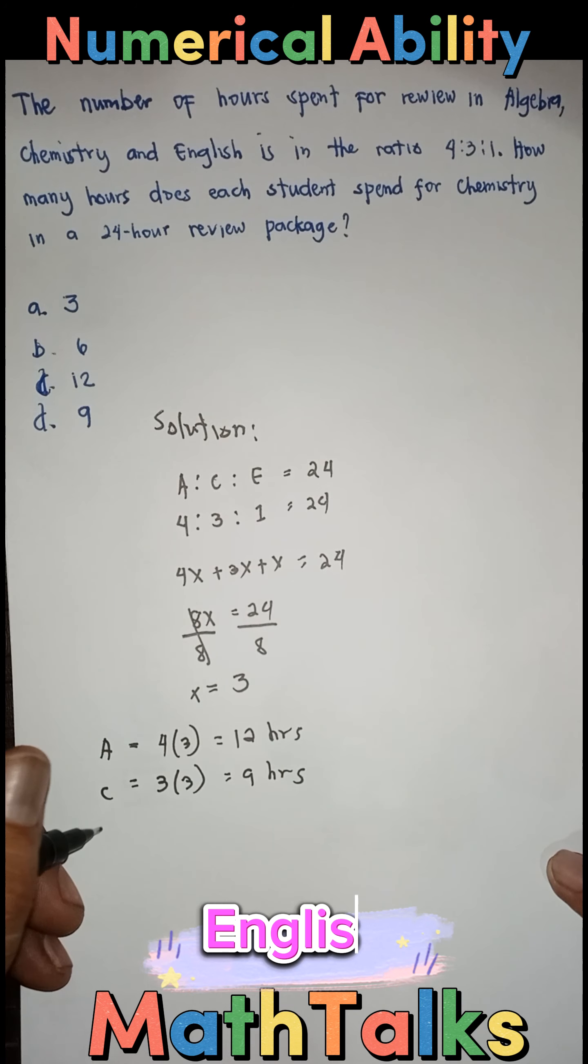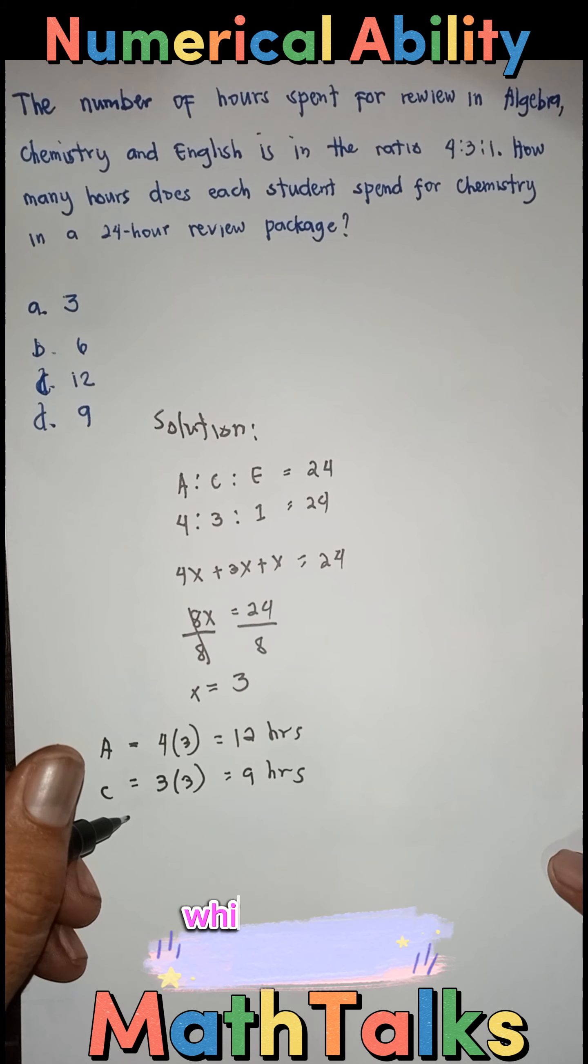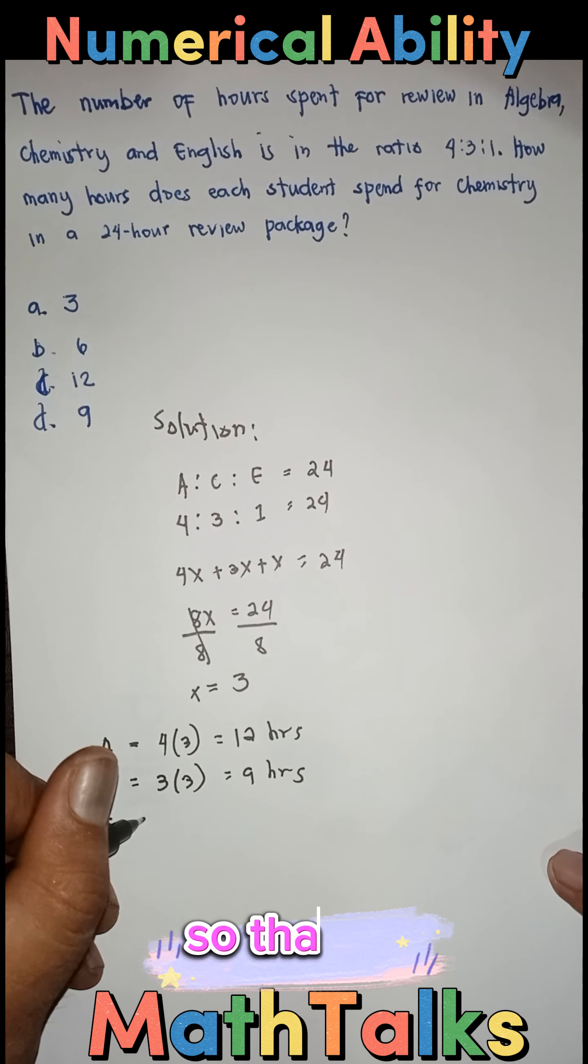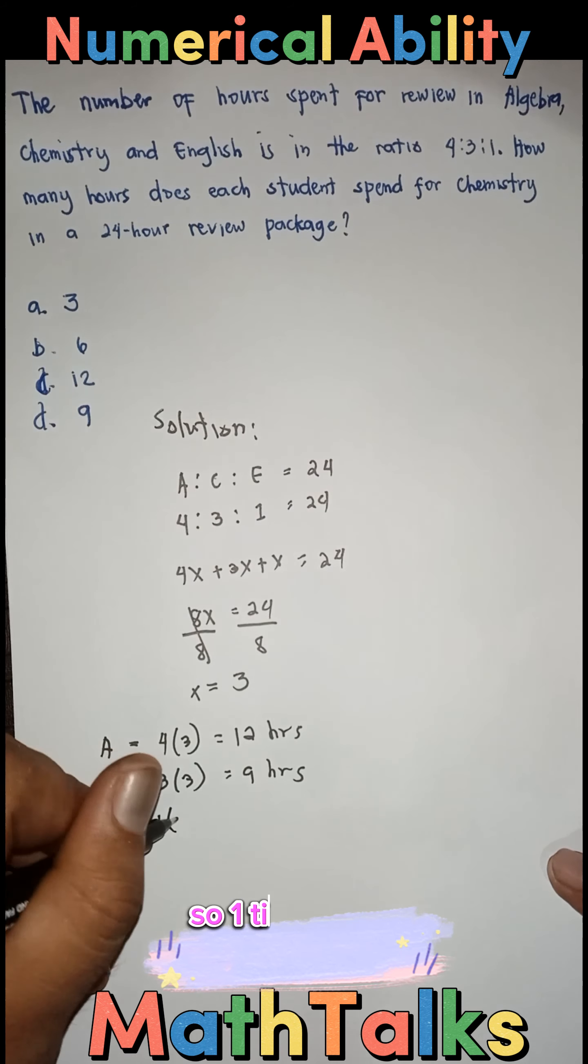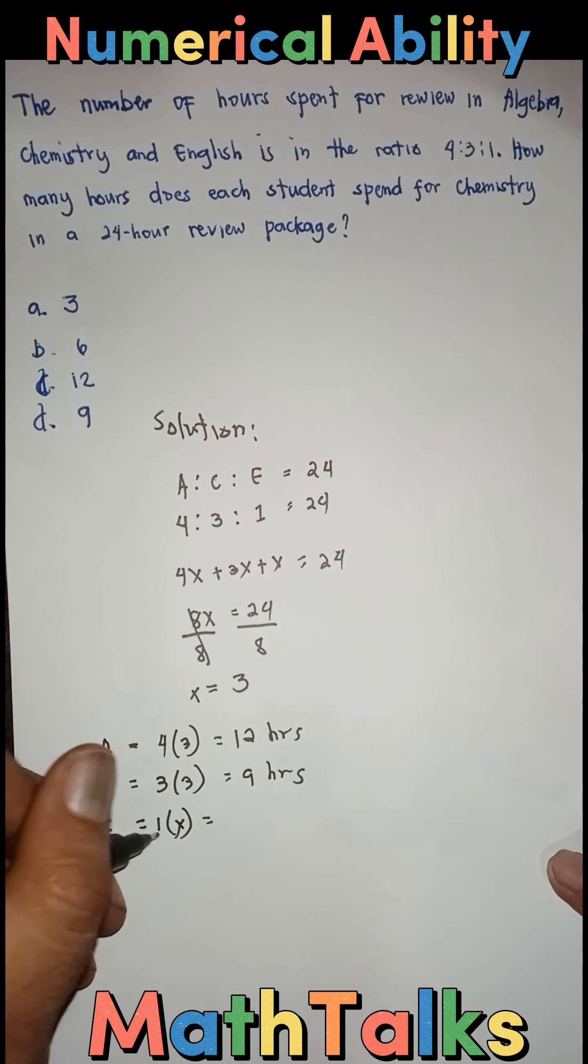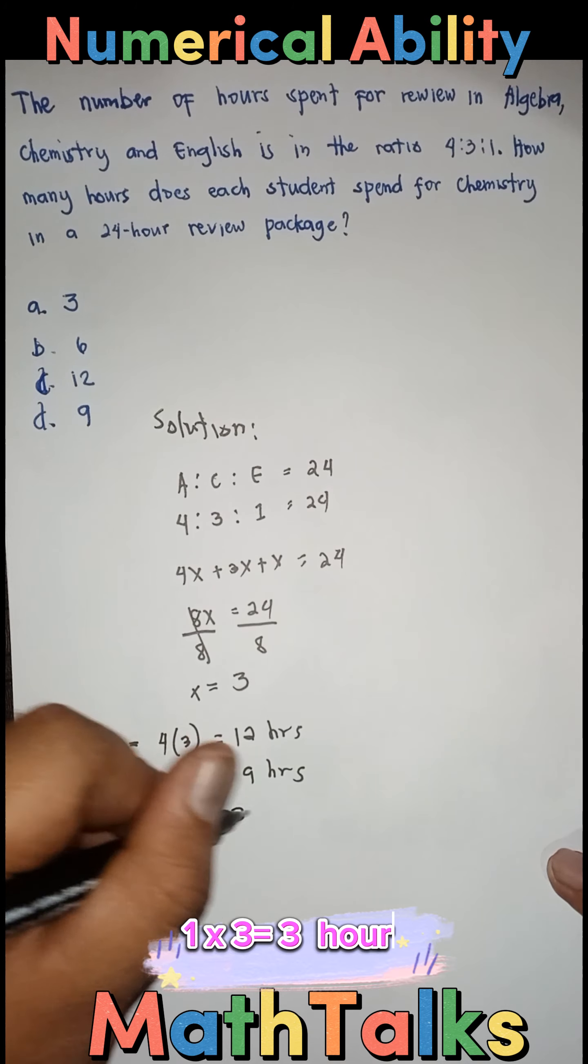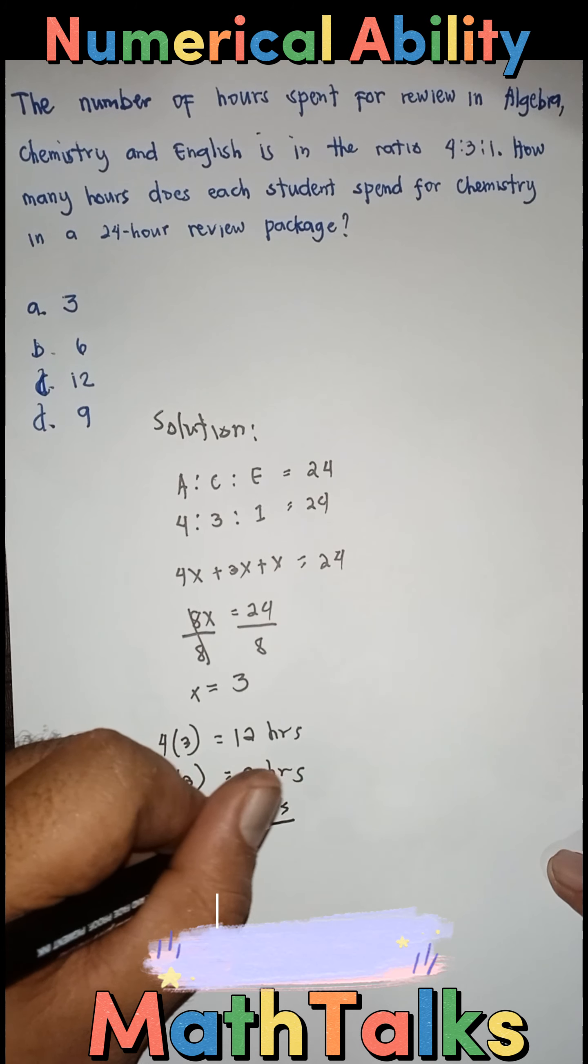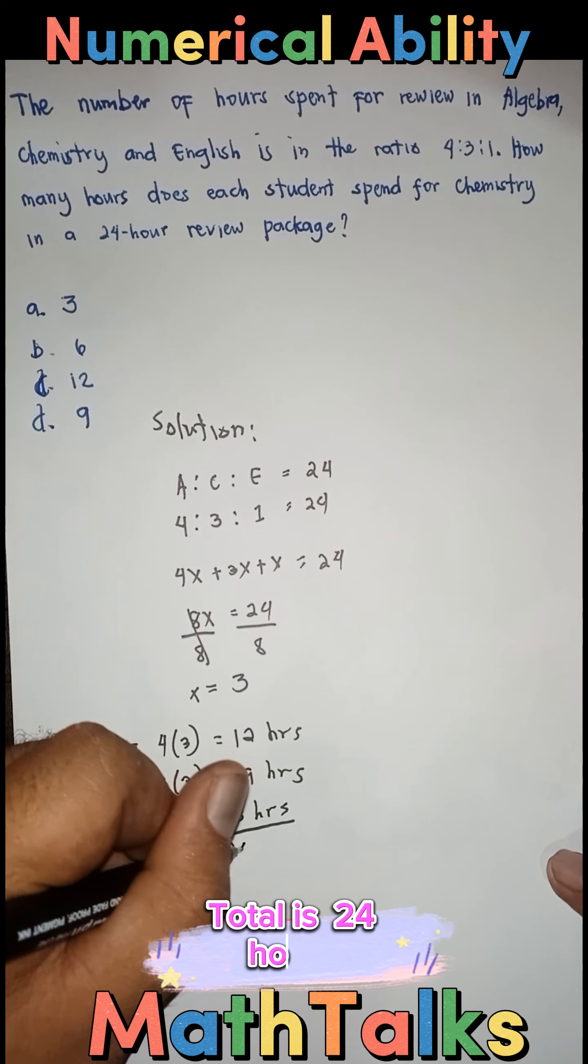Then, sa English, which is equal to 1. So, that's X. So, 1 times X. Or simply, 1 times 3 is equal to 3 hours. So, ang total nito, that's equal to 24 hours.